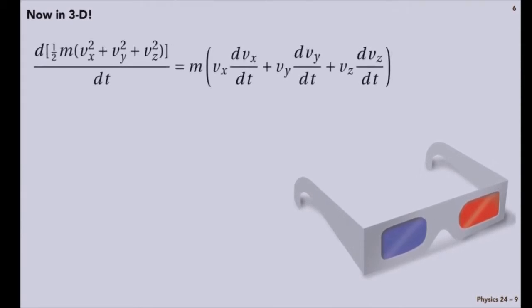So let's do the same thing. I have to now write out the kinetic energy as the sum of the components squared of the velocity in three orthogonal directions, x, y, and z.